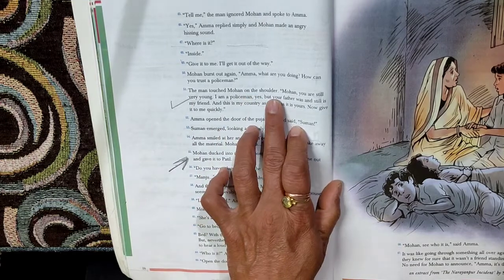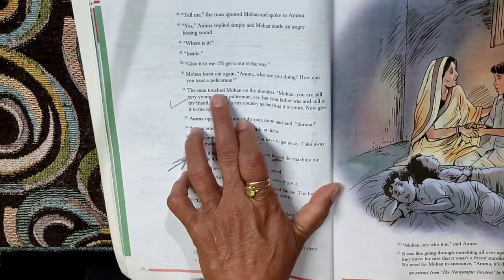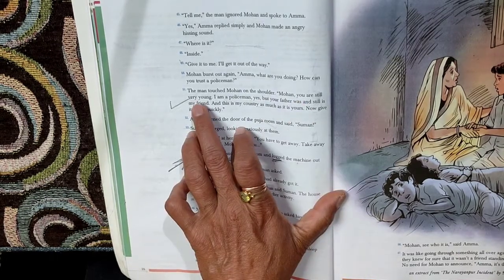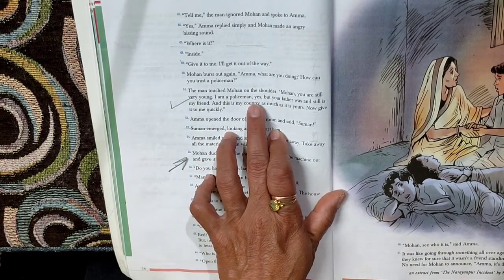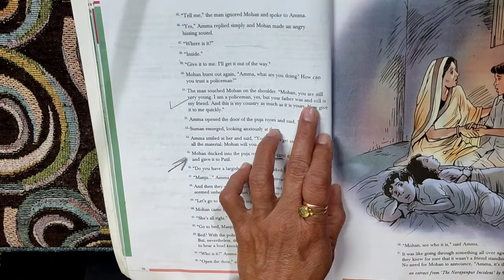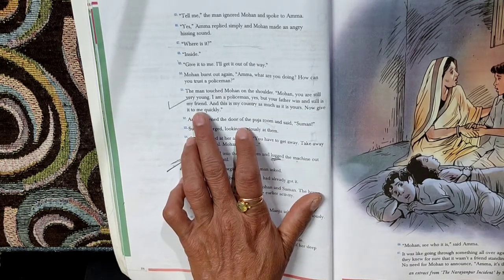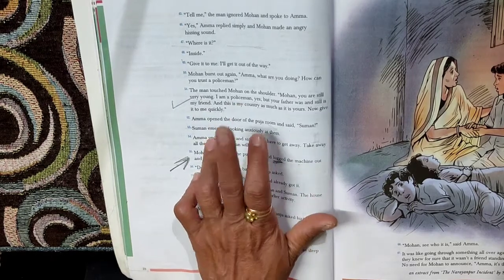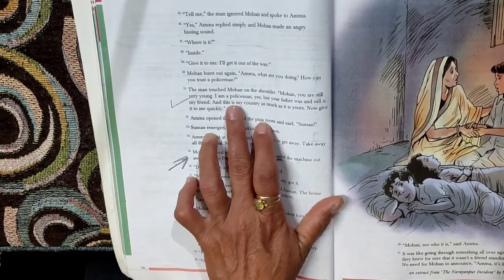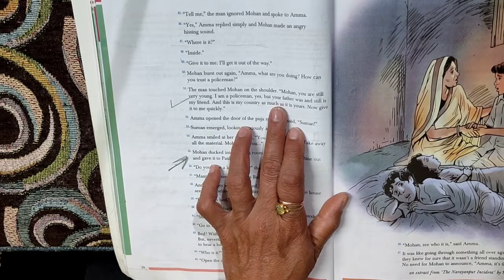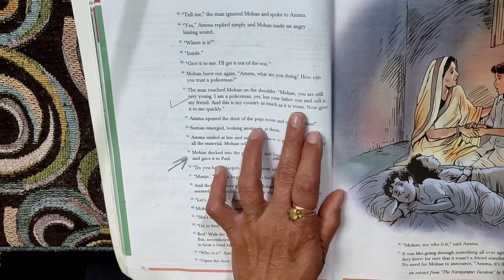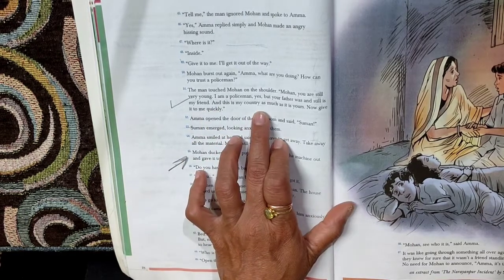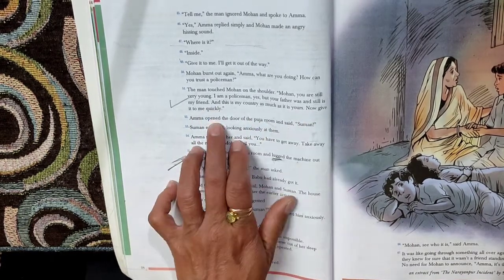The man touched Mohan on the shoulder. Sub-inspector Patel touches Mohan on the shoulder. Mohan, you are still very young. I am a policeman, yes. But your father was and still is my friend. So he believes in true friendship. I am serving the police, yes, but I am still a friend to your father. And I was a friend to your father in school. And this is my country as much as it is yours. Now give it to me quickly.